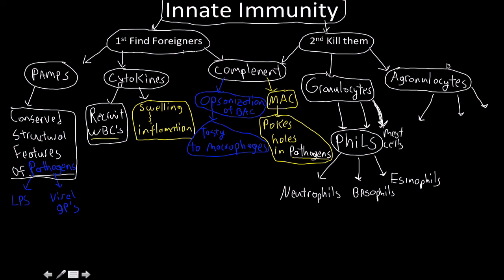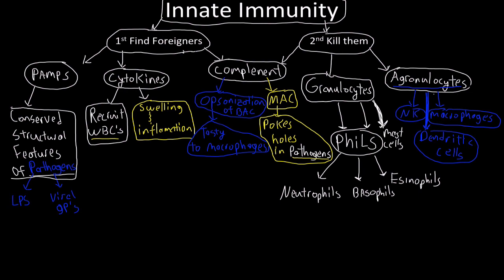Now, for the agranulocytes, there's natural killer cells. There are things called macrophages or macrophages, whatever you want to call them. Phage, phage, it's all the same thing. And one last one I want to talk about are known as dendritic cells. And that's pretty much it for the innate immunity.